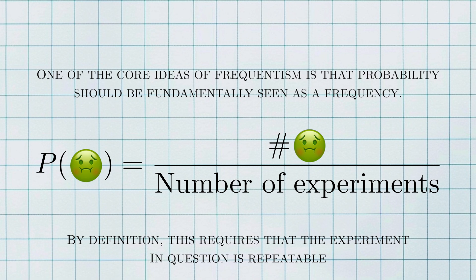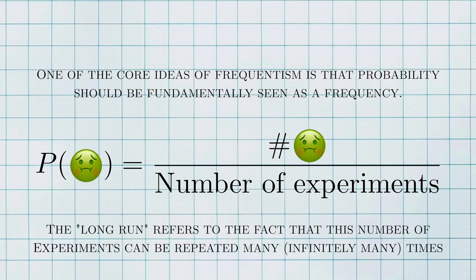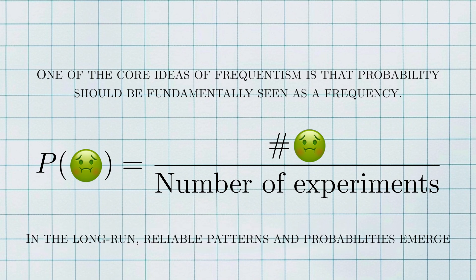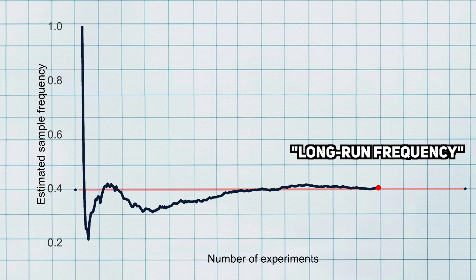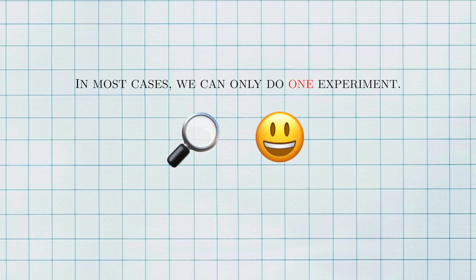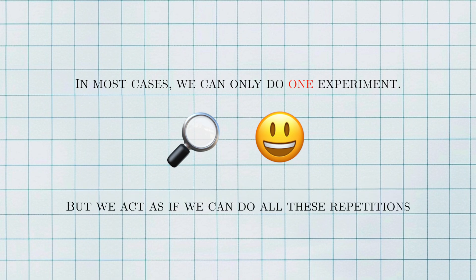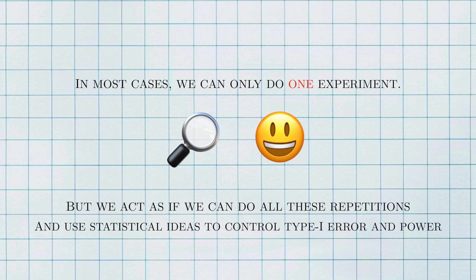The long run refers to the fact that this number of experiments in the denominator can be repeated many, many — you might even say infinitely many times. In the long run, patterns and probabilities will emerge from the data. If you were to plot the frequency of an event over how many experiments are used to calculate it, you'd see that it starts to level out at some number. You'd call this the long-run frequency of these experiments. This is the law of large numbers in action. In most cases, we only ever perform one experiment, get one dataset, and see one test statistic. But the idea is that we can theoretically repeat this experiment and be able to control things like power and type 1 error with these repeated experiments in mind.